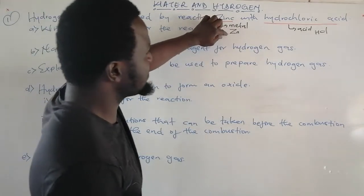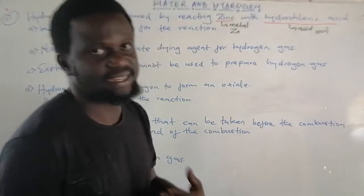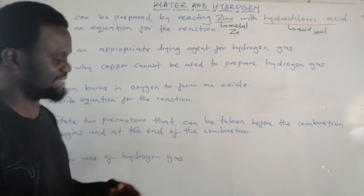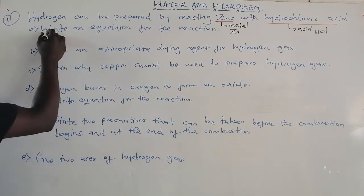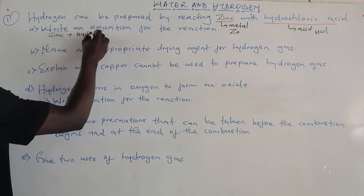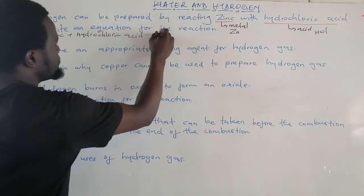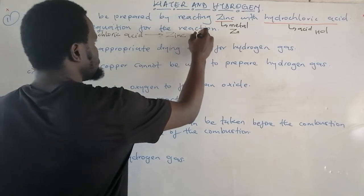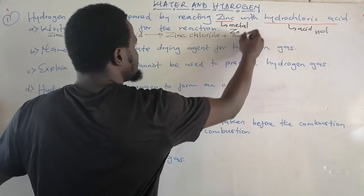When zinc reacts with an acid — say hydrochloric acid — it forms zinc chloride and hydrogen gas. Therefore, for this question, in case someone is in Form 1, I will say: zinc plus hydrochloric acid forms zinc chloride plus hydrogen gas.